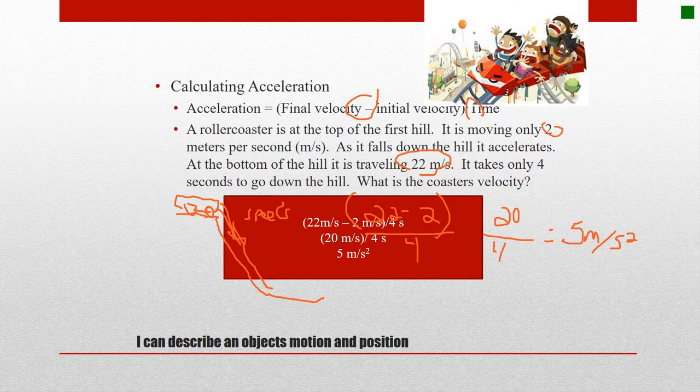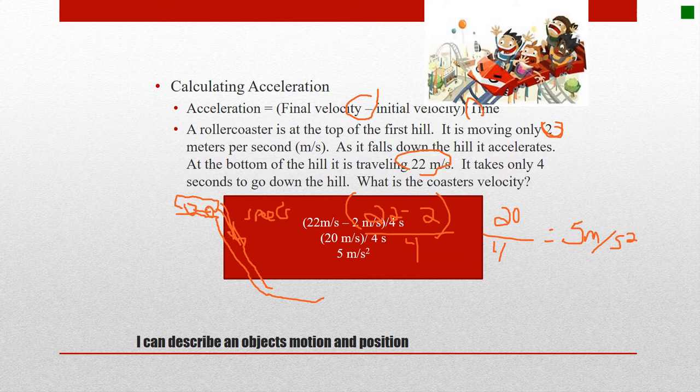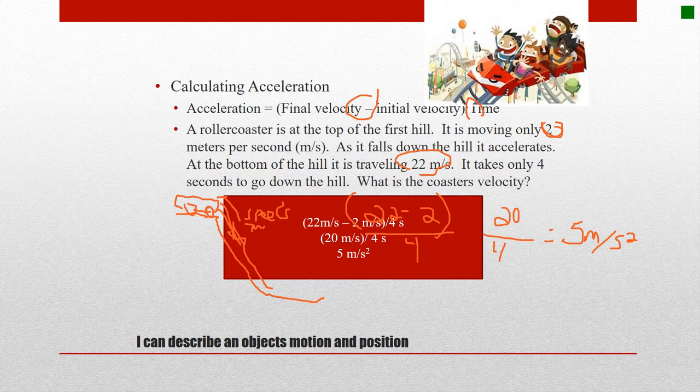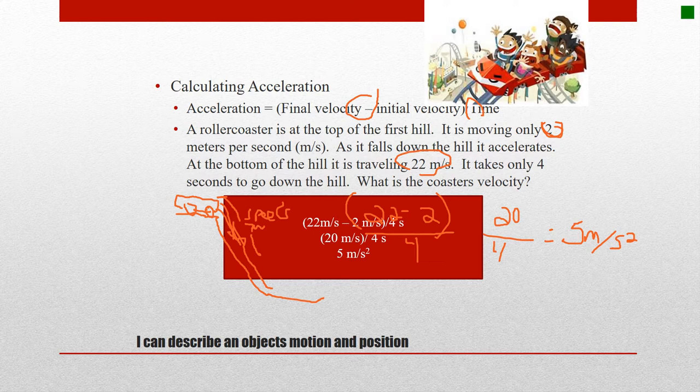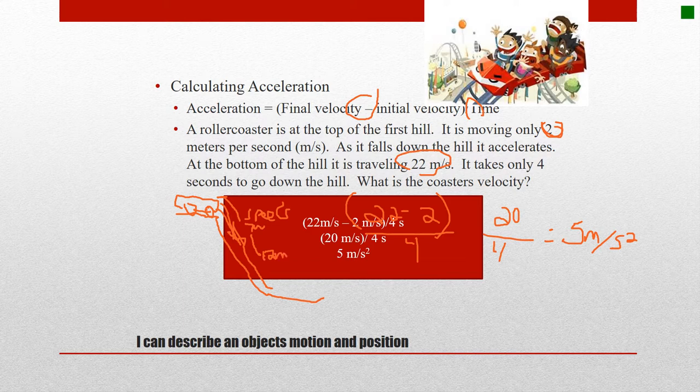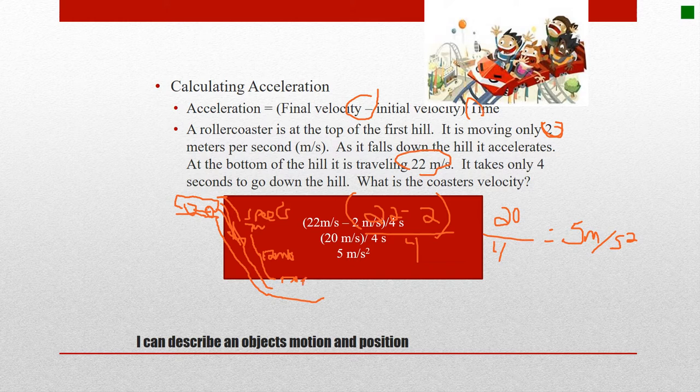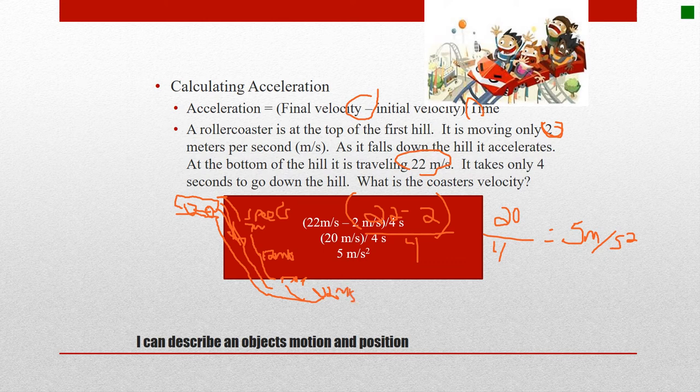Remember, we started at 2 already. So starting at 2, then we add 5 meters per second more faster. So after one second, it's going 7 meters per second. And then after another second, now it's going another 5 meters per second faster. So now it's 12 meters per second. Then another 5 after 3 seconds, so that's going to be at 17 meters per second. And then at the bottom, then of course, 22 meters per second after 4 seconds. We'll practice this more this week.